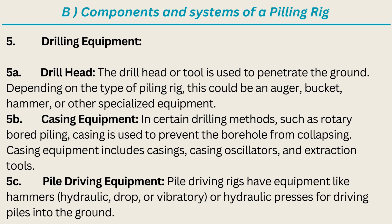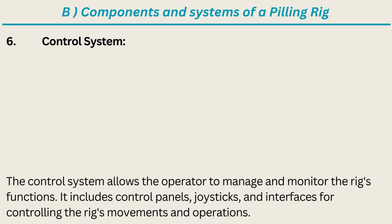Pile Driving Equipment: pile driving rigs have equipment like hammers — hydraulic, drop, or vibratory — or hydraulic presses for driving piles into the ground. Control System: the control system allows the operator to manage and monitor the rig's functions. It includes control panels, joysticks, and interfaces for controlling the rig's movements and operations.